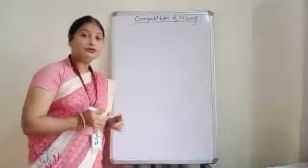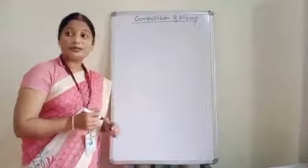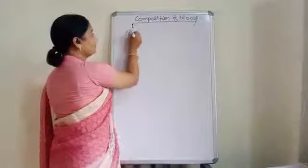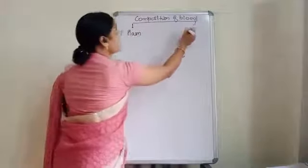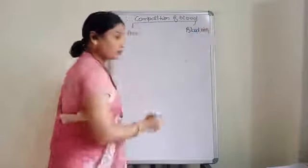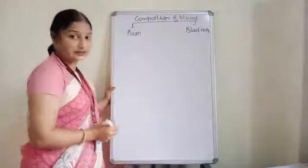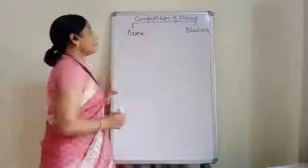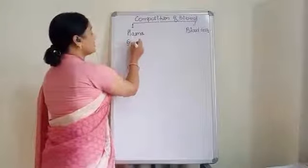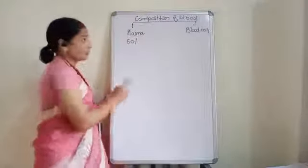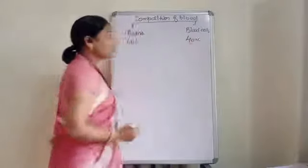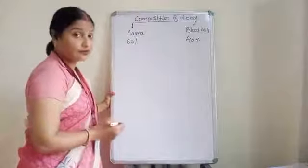As I told you, blood is basically made up of two things: one is plasma and blood cells, also called blood corpuscles. This plasma contains 60% of the volume of blood, and hence the blood cells will contain 40% in the composition of blood.